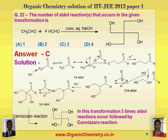In paper first, the first organic question is question number 22: the number of aldol reactions that occur in a given transformation is. Here they ask, when acetaldehyde reacts with four molecules of formaldehyde in presence of concentrated aqueous sodium hydroxide, it will give this compound. Their options are A1, B2, C3, and D4.